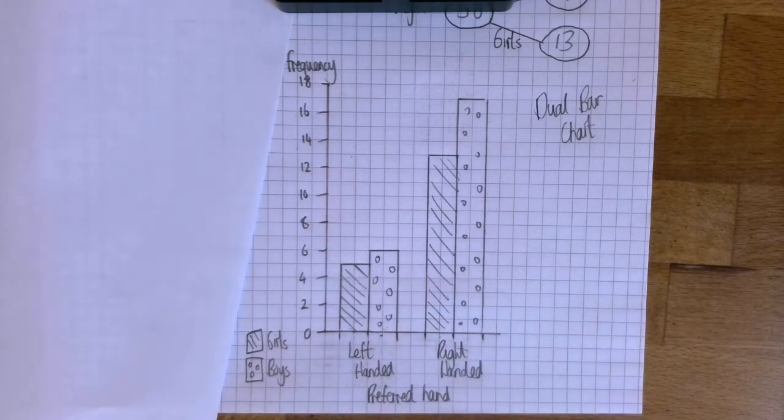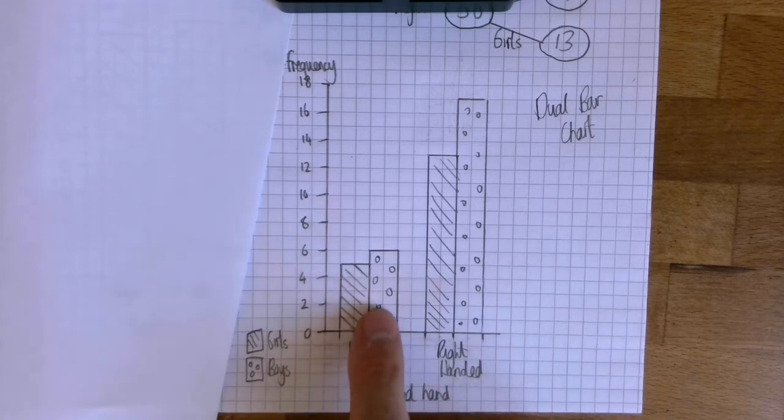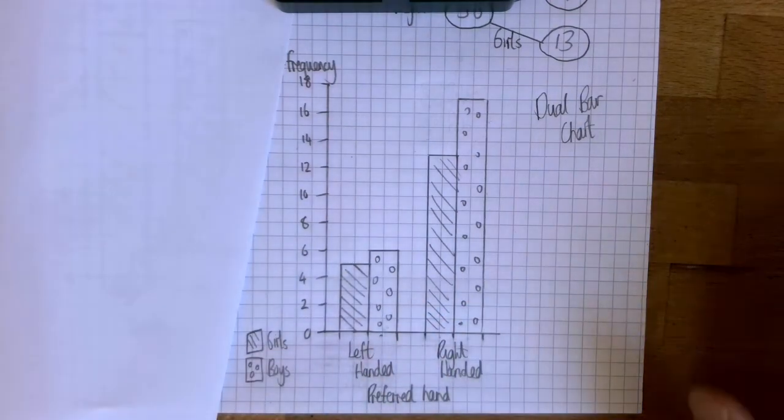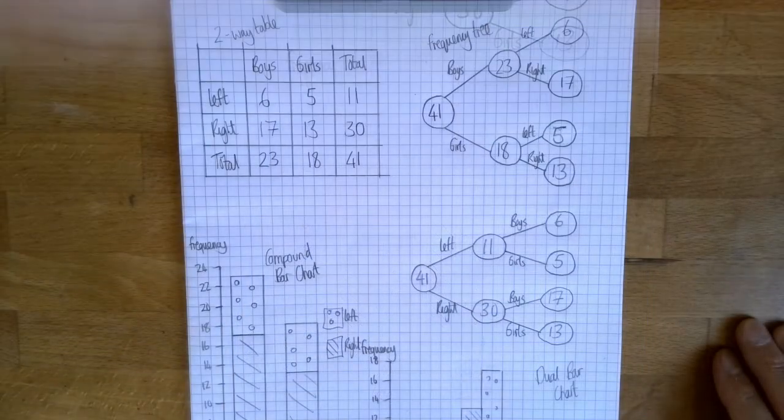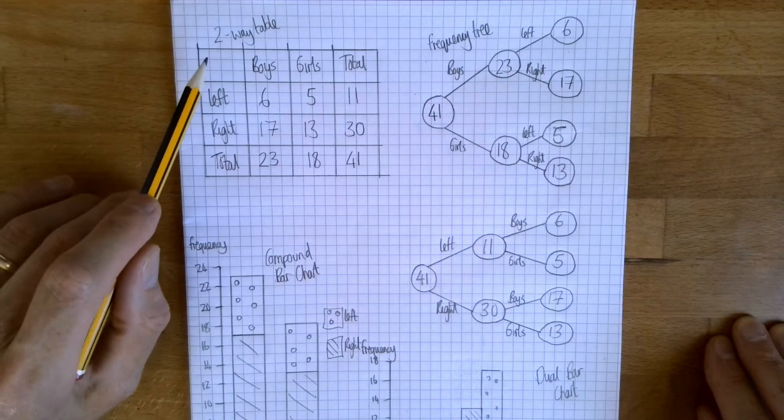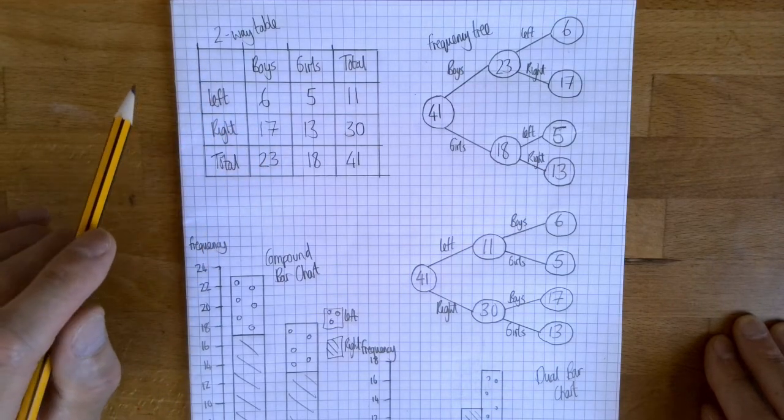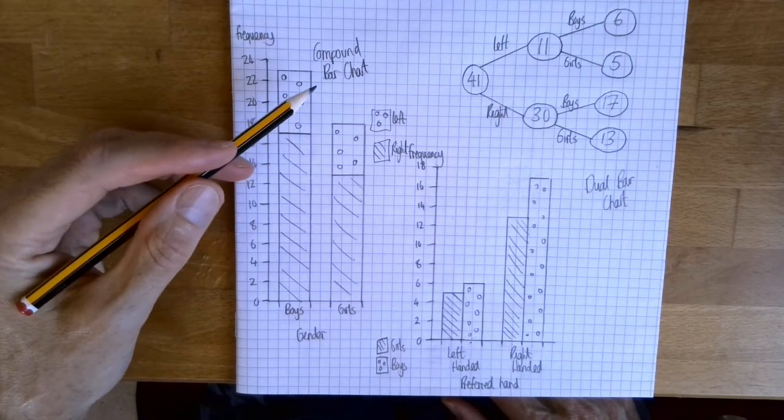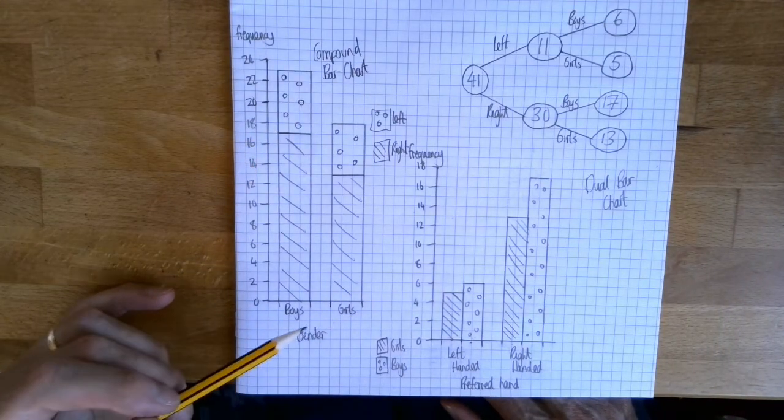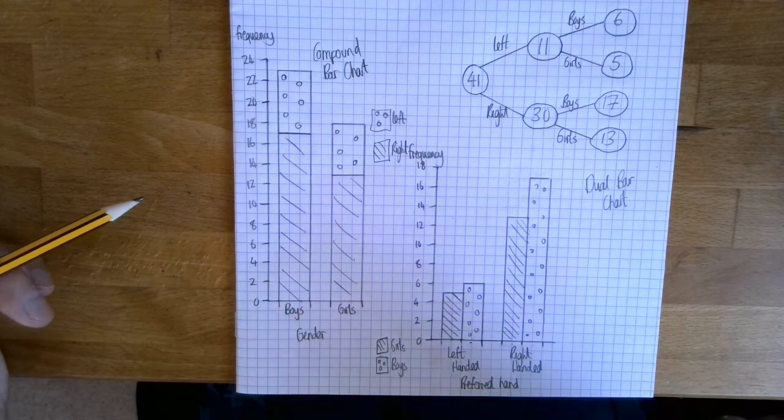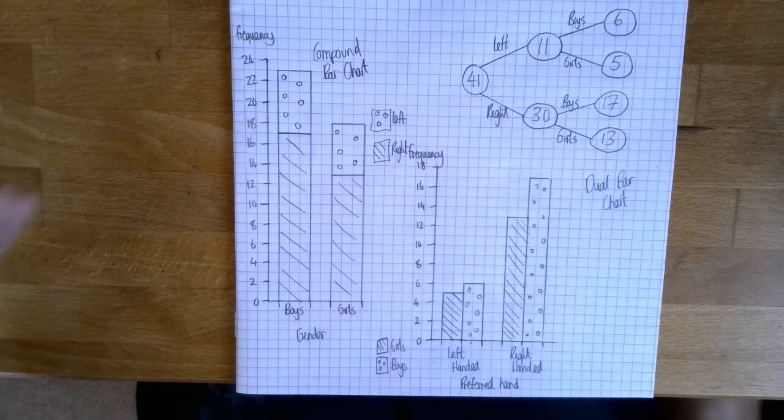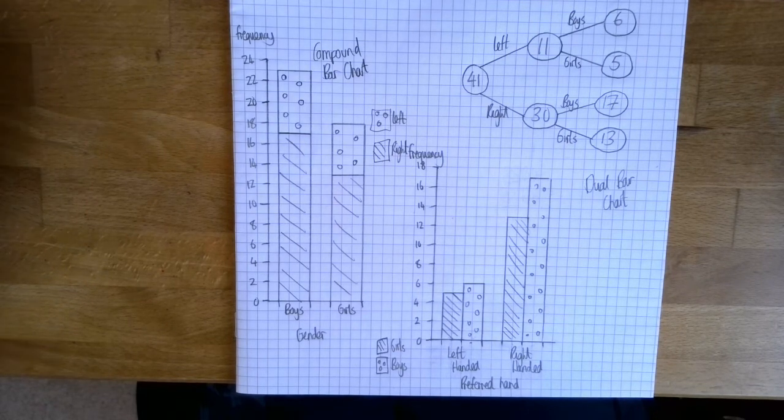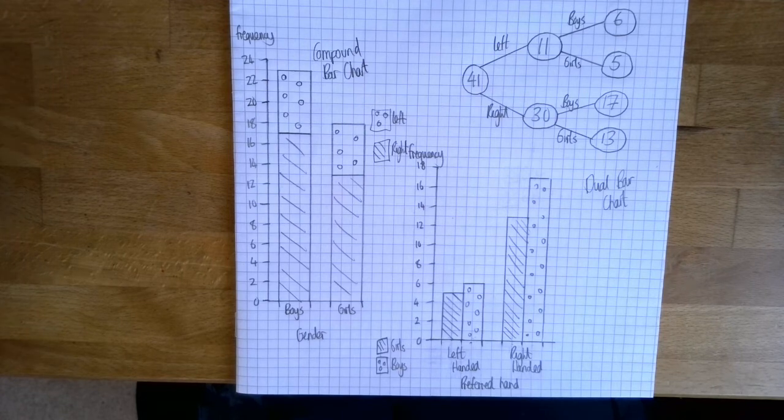Of course I could have done a dual bar chart with boys here and a bar for left and a bar for right, and girls here with a bar for left and a bar for right with a different key. So I took that one set of data and displayed it in a two-way table which I could have done two ways, in a frequency tree which I did in two different ways, and then I did a compound bar chart and I could have done that two ways, boys and girls or left-handed right-handed. And a dual bar chart and I could have done that two ways. This is the great thing about maths—the same set of data can be displayed in a number of ways and it's not that one is better than the other. You can choose a way that suits you or whatever purpose you have in mind for the data.